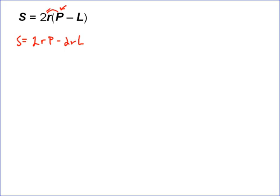We multiply the 2r times p, and the 2r times the l. Now I need to get the p by itself, so I need to subtract the 2rl from both sides, or actually add the 2rl to both sides. That's going to give you s plus 2rl equals 2rp.